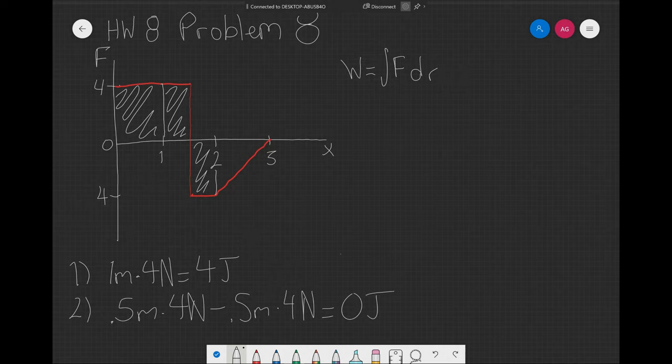For the third interval, you have a triangle. So again, you just get this area, base times height, but the area under the curve is negative since it's below zero.